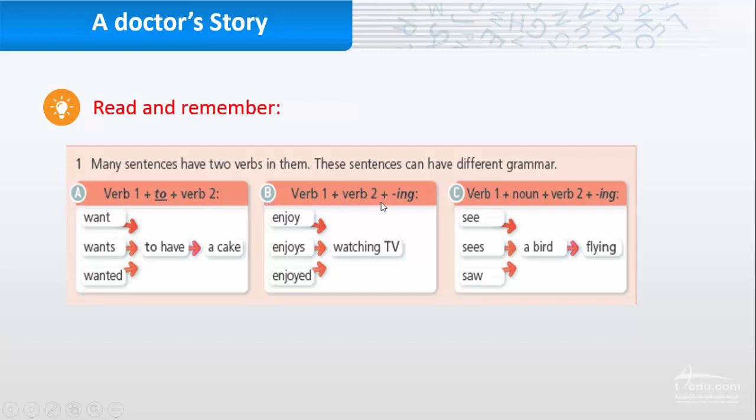B: We have verb one, verb two, then -ing. For example, verb one, you can add S or ED, then watching TV. So here we have two verbs following each other. Then we have verb one plus noun plus verb two plus -ing. For example, see, sees, saw, a bird flying. So in case if you are going to put two verbs together, the first one you can put in the middle to. The verb two after the word to is going to be the basic form. The second choice: two verbs with -ing. The last one, you can have verb, then noun, then the second verb with -ing.